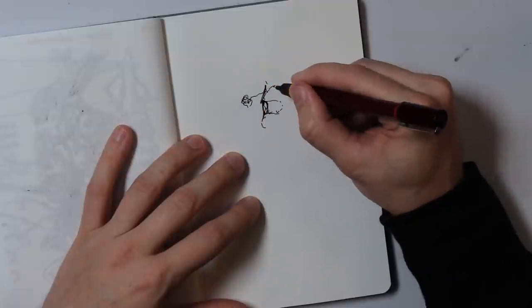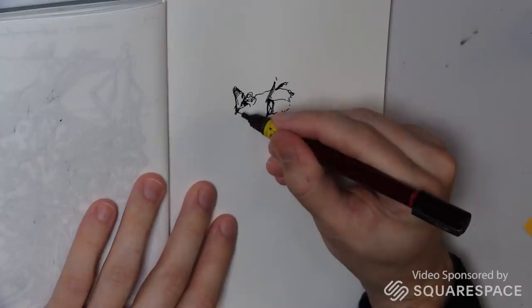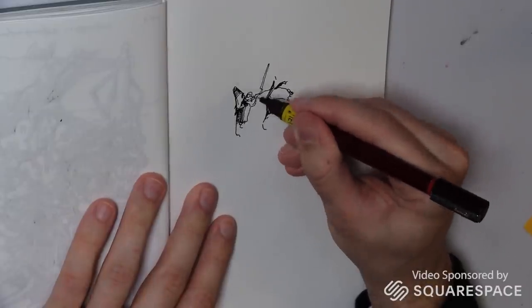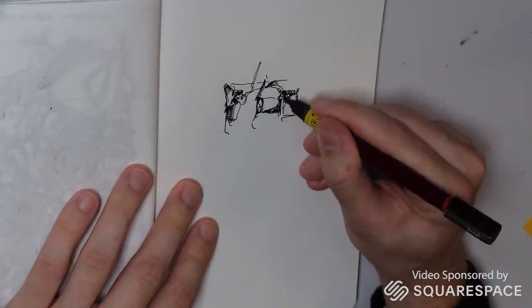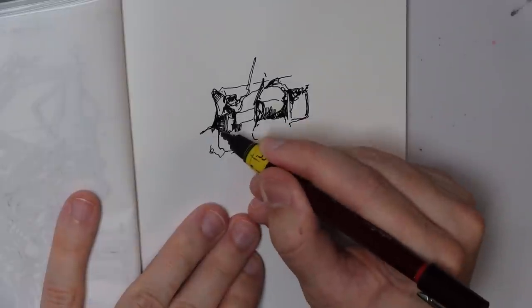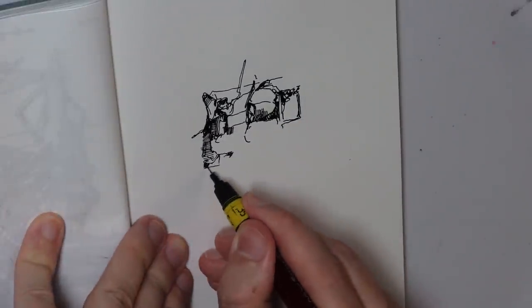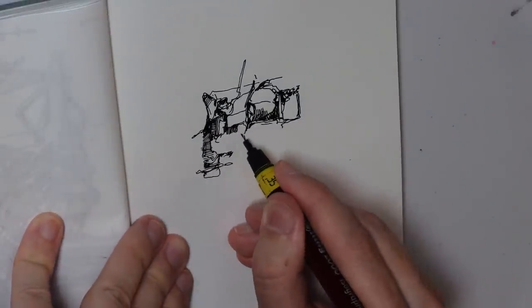Okay, it's time to put pen to paper and do some drawing. In this video brought to you by Squarespace, we're using the Rotring Isograph 0.35.